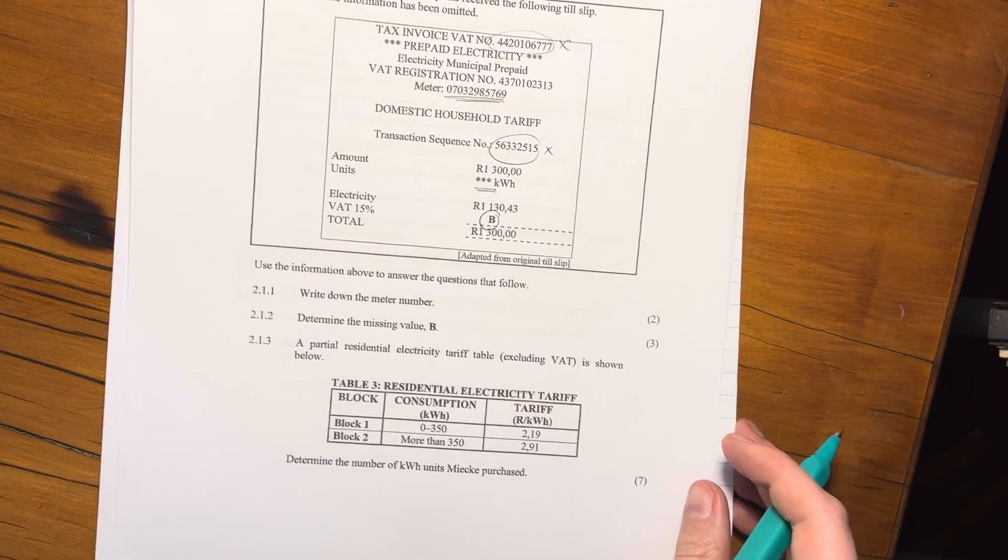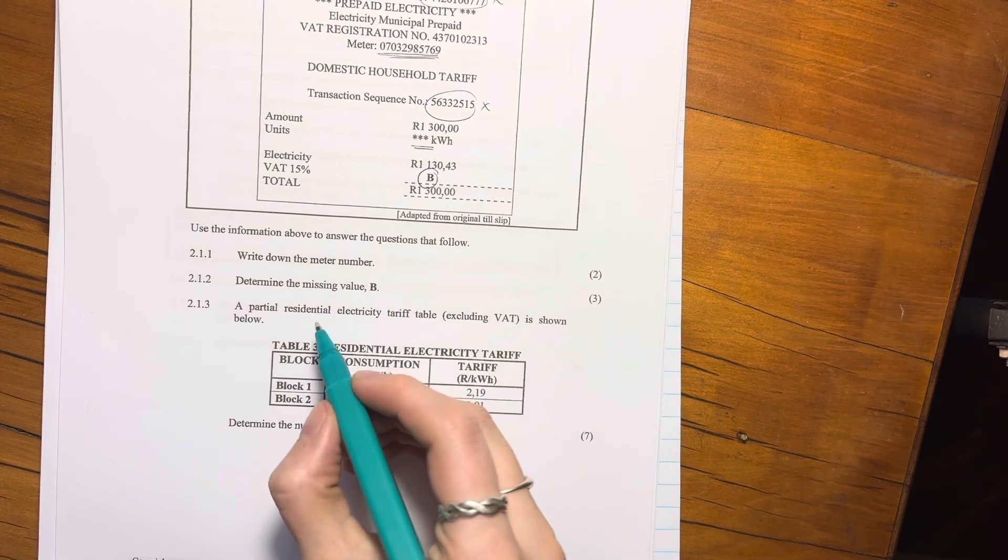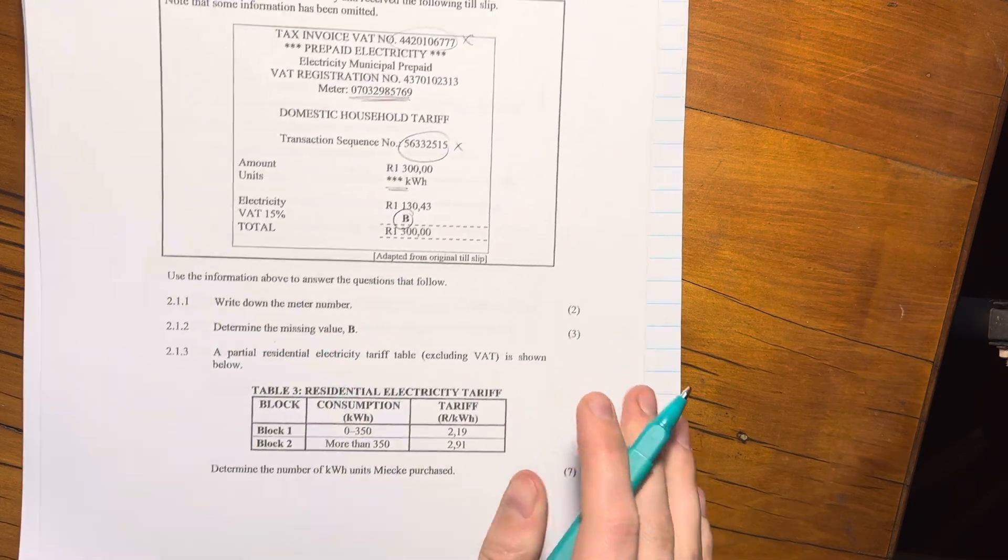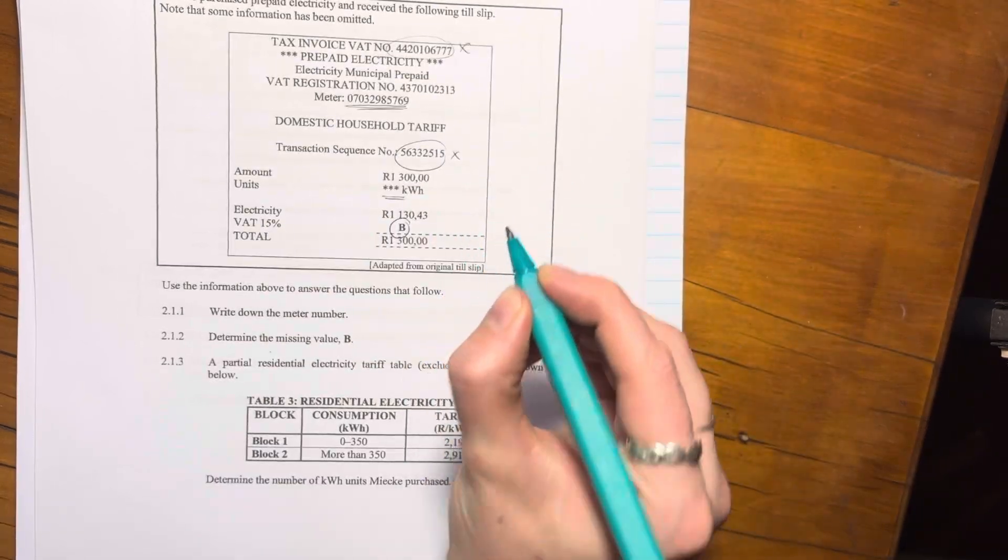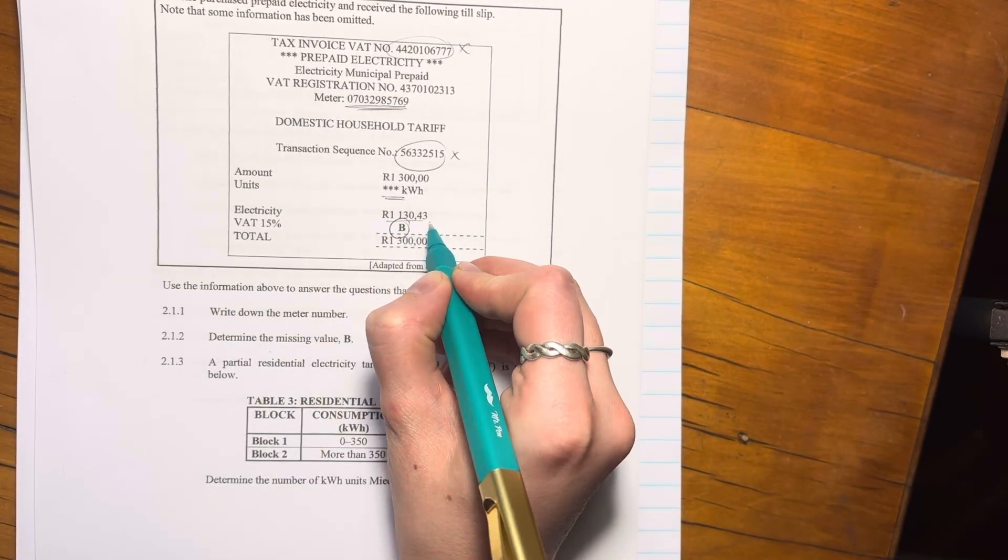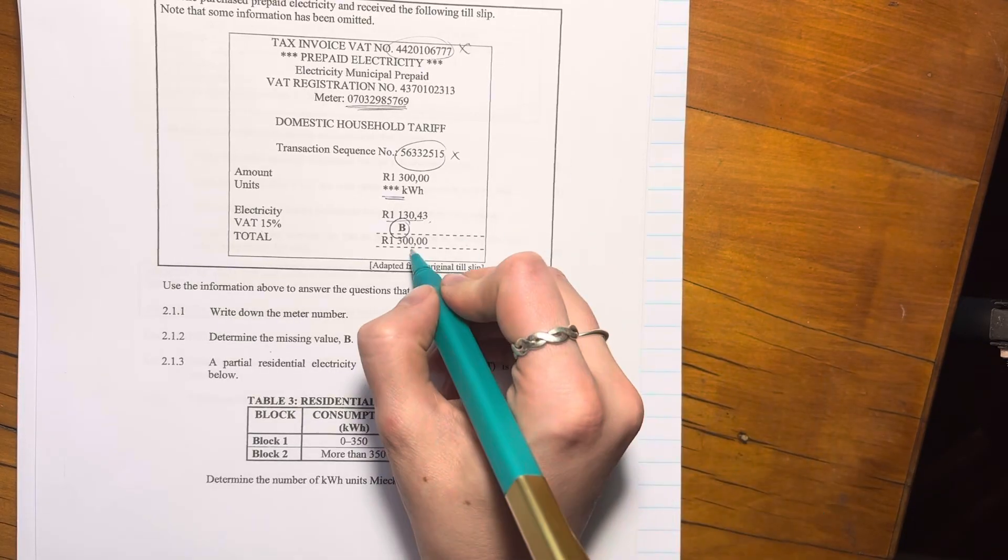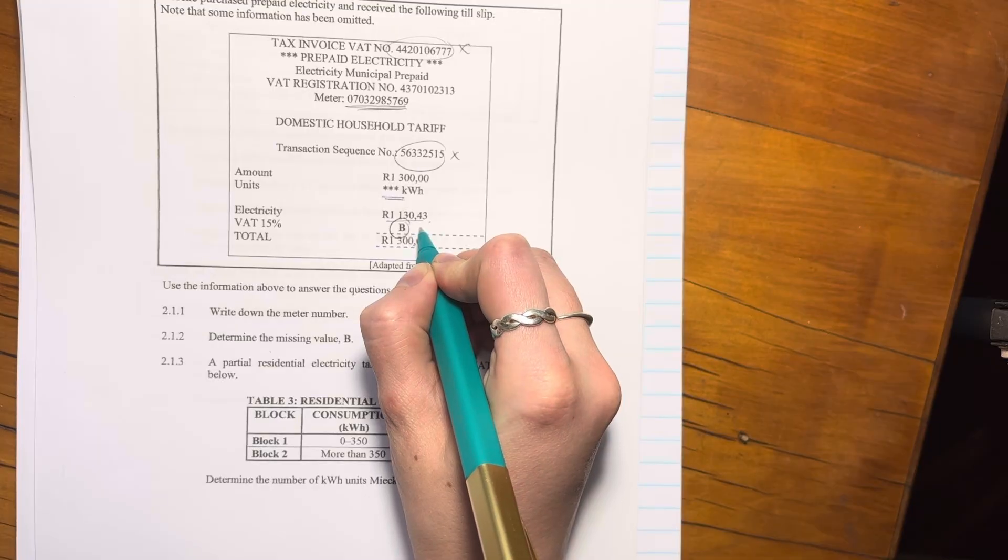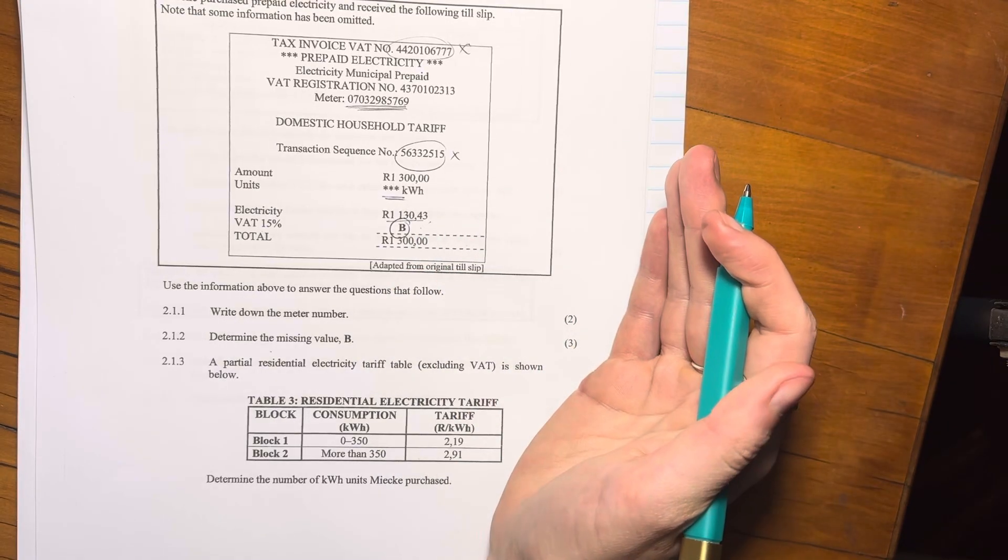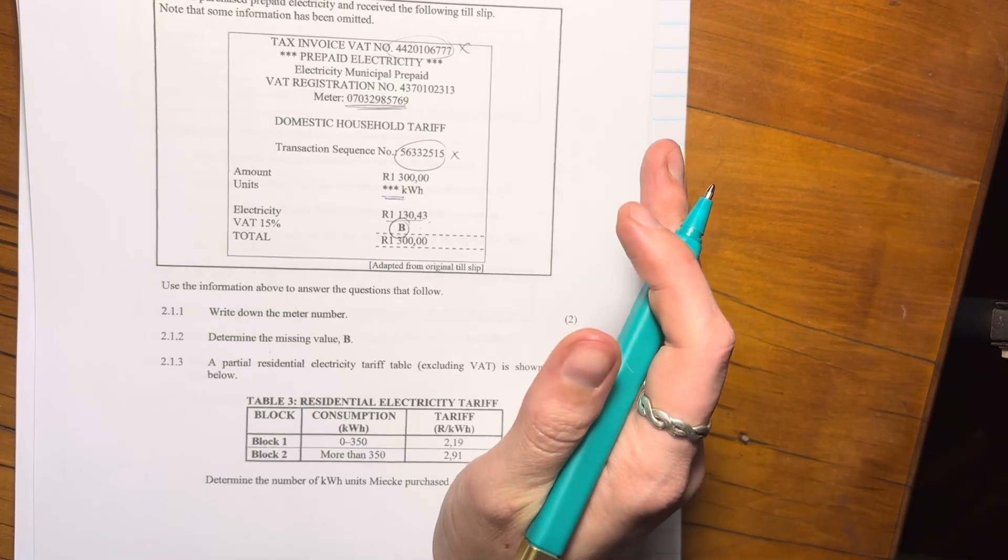Let's look at 2.1.2 and 2.1.3. You can see it's ramping up in marks, which is fine, but we just need to concentrate. So just determine the missing value B. Now, there's two ways you can determine the missing value B. The first way is just applying 15% to this amount because it tells you that VAT is 15%. Or you could just say the total, subtract that amount, has to give me the VAT amount, right? Which I think is actually the easier approach.